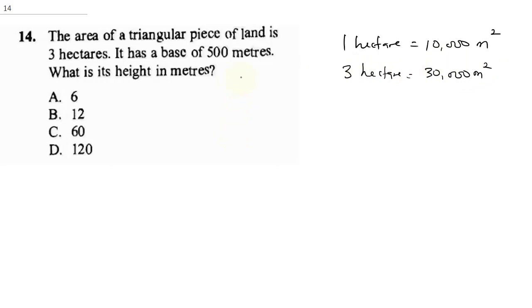It says it has a base of 500 meters. What is its height in meters? Notice it says it's a triangular piece. Let's say it's something close to this and the base is 500. Remember, we're looking for the height and the area. Area is half base times height, which is equal to 30,000.